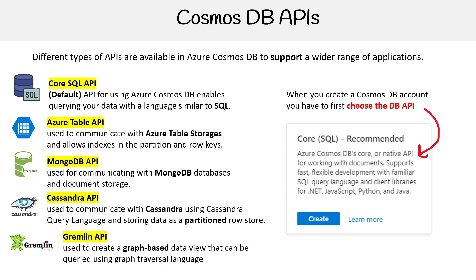Then you have Gremlin API, which allows you to use a graph database. These are really different things and it can be a bit confusing, but that's just how Azure organizes their services. Hopefully that clears it up.